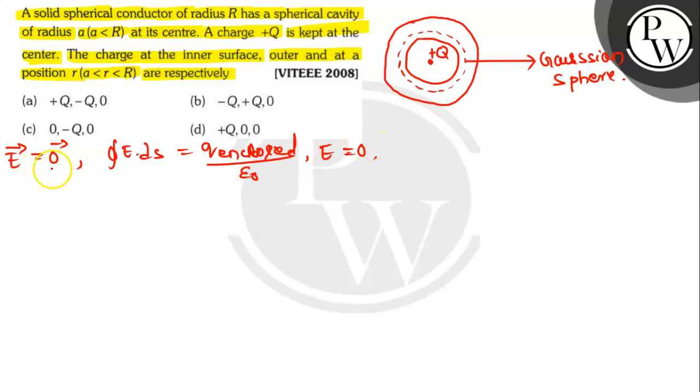Now, consider a Gaussian sphere of radius r (A less than r less than R) as shown in the figure. The surface of the sphere lies within the conducting spherical shell. Hence, E vector equals 0.